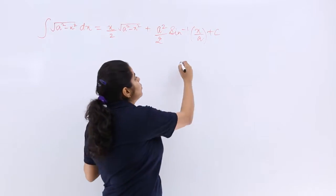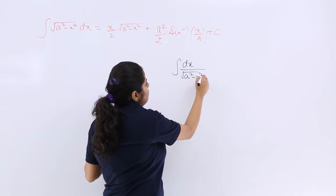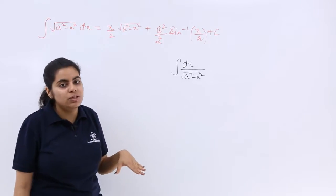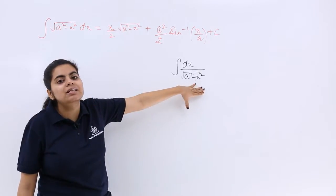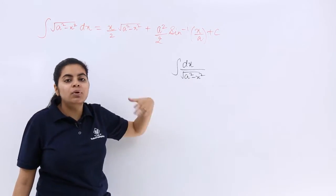Please do not get confused with the formula dx/√(a² - x²). If you have a question where the denominator has the root and it can be expressed in this form, the formula is different.